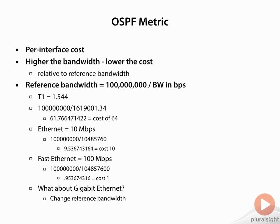Here are some calculations you can easily compare. A T1 link is 1.544 megabits per second. If you plug that into the calculation, you get approximately 64.76, which rounds to a cost of 64 for a T1. For Ethernet at 10 megabits per second, the formula gives 9.5, which rounds up to 10. So the cost is 10 on that interface.